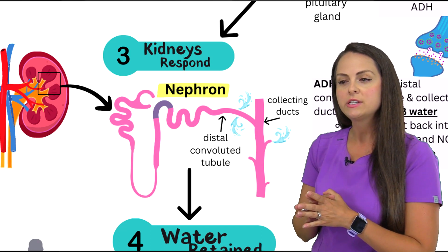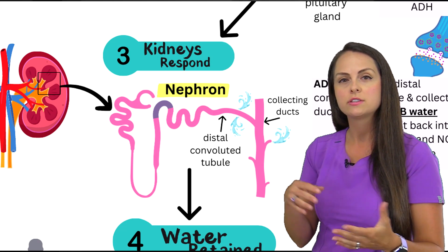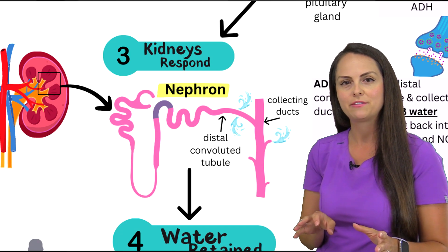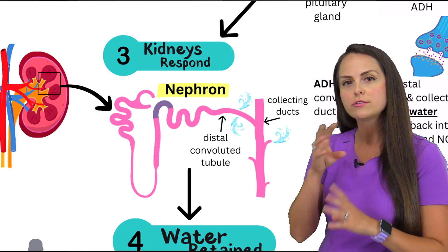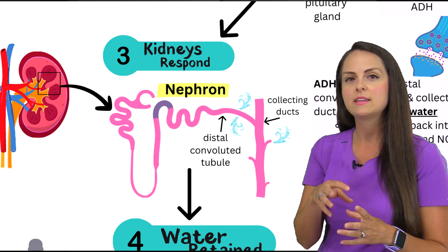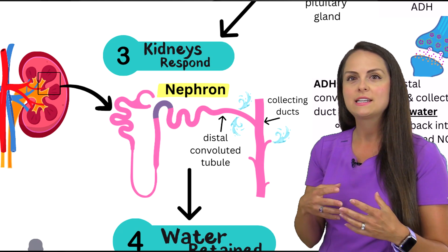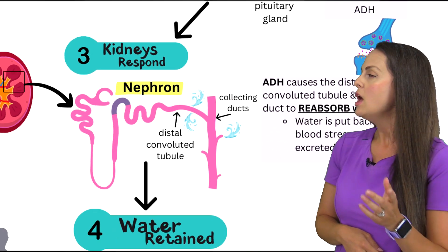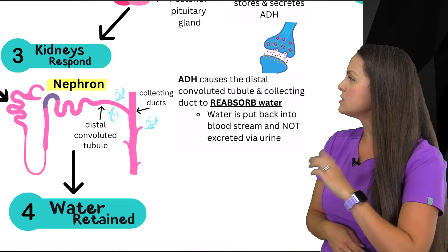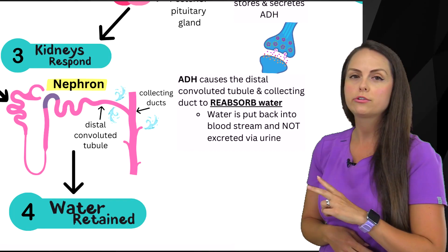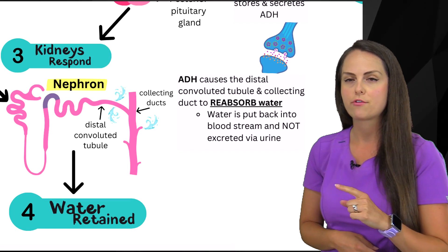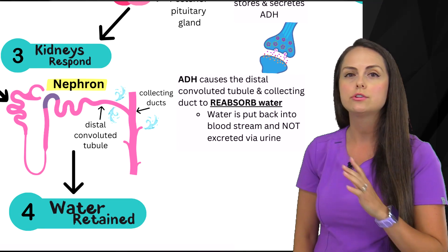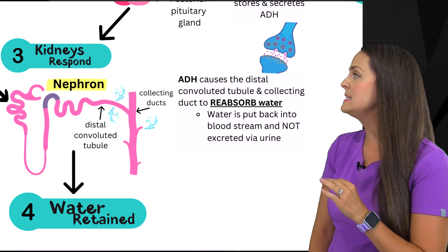ADH is particularly going to cause the nephrons within the kidneys to start doing things a little bit differently. Nephrons are all those little structures within the kidney that work to keep it functioning and help create urine. The ADH is going to act on two particular parts of the nephron: the distal convoluted tubule and the collecting duct.